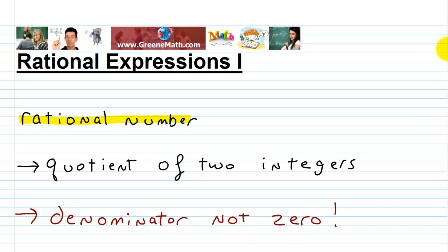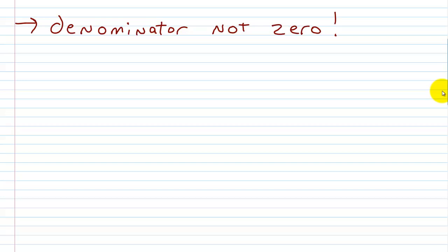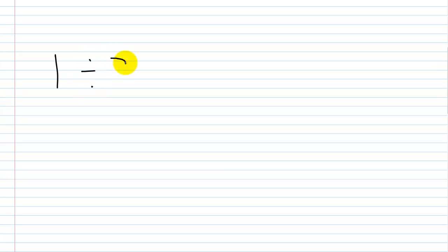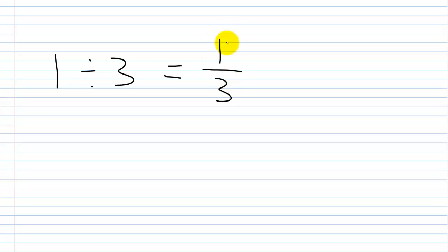Because remember, you can never divide by zero. So as an example, let's say you had one divided by three, or written in fractional form as one over three. This is a rational number — one third — because I have the quotient of two integers. I have one, which is an integer, over three, which is also an integer.